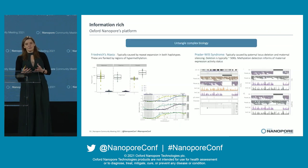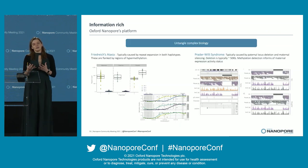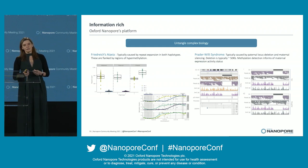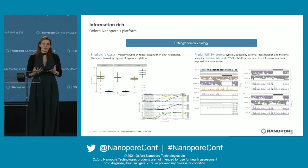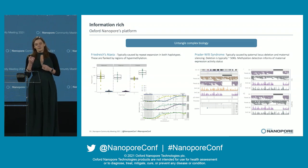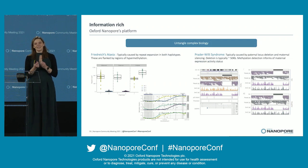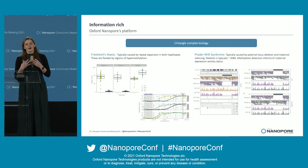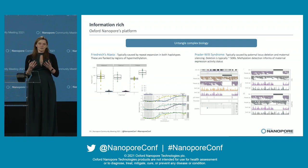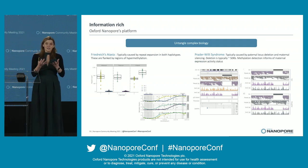Our applications team works in collaboration with users who have particularly difficult samples to bring all of these different metrics to life. You can see things for example in Friedreich's ataxia or Prader-Willi syndrome — really complex genetic disorders — where the technology is letting users start to untangle that. You can see not just the impact of SNPs and structural variants, but how the structural variation adds to it. Users are really starting to get to know their samples much more intimately.